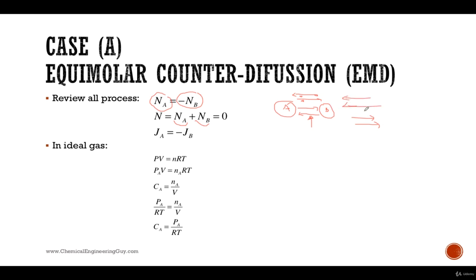What you will see is that as A goes to the right, you will see also B to the left, therefore the total flux, if you were to measure, will be marked as overall zero. If this is true, then as stated before, the fluxes due to diffusion must be equal, JA equals negative JB.